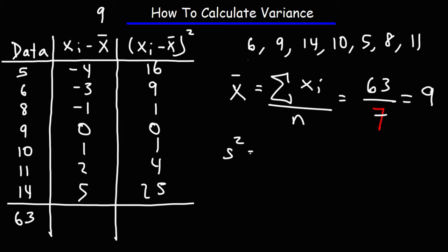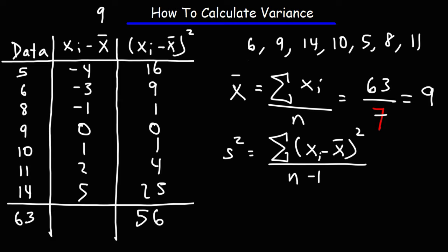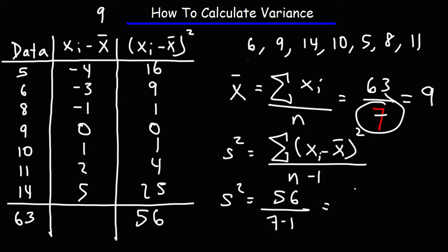Keep in mind, the variance is going to be the sum of the square differences between each data point and the sample mean, divided by n minus 1. So to get this part of the formula, we simply need to take the sum of this column. So it's going to be 16 plus 9 plus 1 plus 1 plus 4 plus 25, and we get a sum total of 56. So it's 56 divided by n minus 1. N is 7, so that's 7 minus 1, or 56 divided by 6. 56 divided by 6 is 9.3 repeating. And this is the variance of the sample.